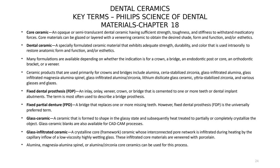Ceramic products used primarily for crowns and bridges include alumina, ceria-stabilized zirconia, glass-infiltrated alumina, glass-infiltrated magnesia alumina spinel, glass-infiltrated alumina zirconia, lithium disilicate glass ceramic, yttria-stabilized zirconia, and various glasses and glazes. Fixed dental prostheses range from inlays to bridges, and fixed partial dentures replace one or more missing teeth. Glass ceramics are formed in the glassy state and heat-treated to partially or completely crystallize the object, and are also used in CAD-CAM processes.